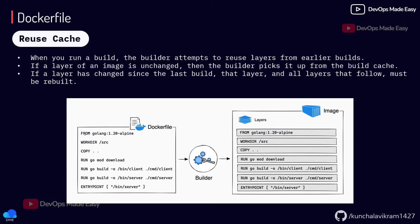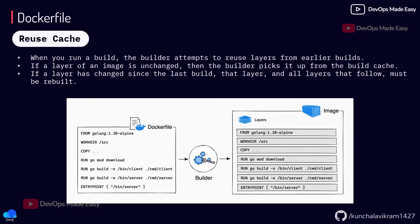If you just installed Docker and build this Dockerfile, since Docker doesn't have any cache locally, it will build all these layers. But if you try to build this Dockerfile again, it won't run any of the layers. It will check whether each instruction has changed from last time. If it hasn't changed, Docker will try to use the cache from last time. So if all the instructions are similar from the last time without any changes, it will try to use all the layers, which helps in speeding up the builds.